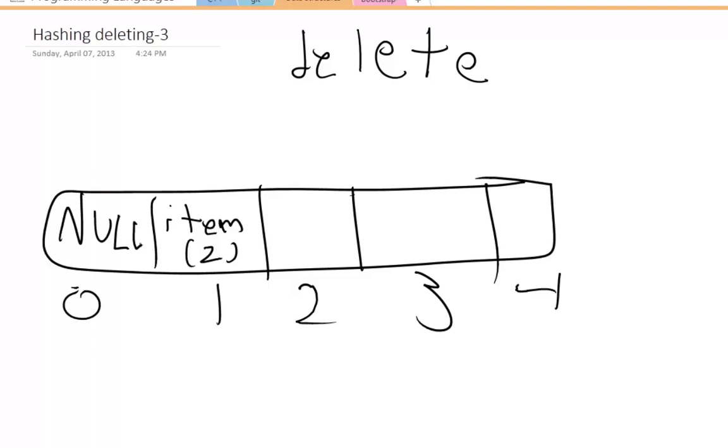So what we can do to fix this is instead, when we delete an item, instead of making it null or deleting it permanently, what we can do is do something very smart and store a dummy value.